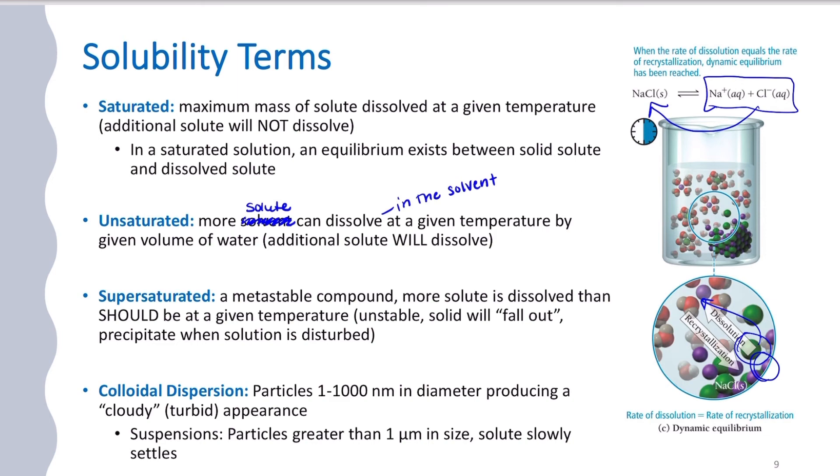If we have a supersaturated solution, this is a special case where it's a metastable compound where we actually dissolved more solute than we should at that temperature. It's actually an unstable system and solution will fall out or the solution will precipitate when the system is disturbed. The way we usually create a supersaturated solution is we mix it quickly, we heat up the sample, all of it goes into solution, we then let it cool slowly, and if we don't disturb it, it will often dissolve more solute than it should based on the temperature when it cools down.